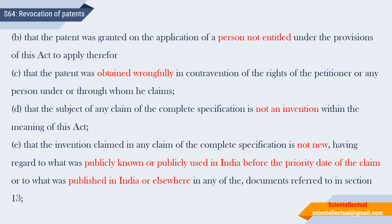Ground B: The patent was granted on the application of a person not entitled under the provisions of this Act to apply therefor — that is, the patent has been granted in the name of a person who is not eligible to apply for it. Ground C: The patent was wrongfully obtained in contravention of the rights of a petitioner or any person under or through whom he claims.